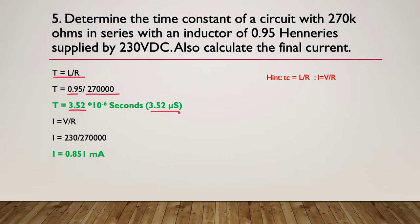Now that we know that, the current is simply the final current, which is simply the volts divided by the resistance. 230 volts divided by our 270k, giving us a final current of 0.851 milliamps.